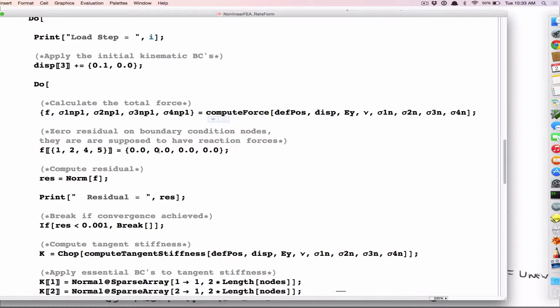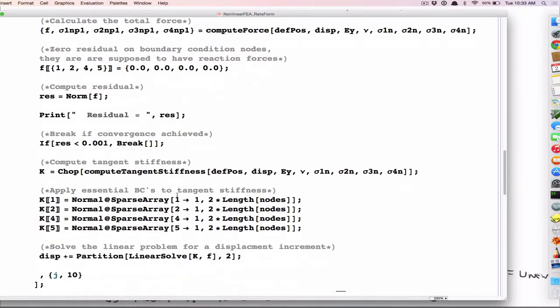If it's not, compute the tangent stiffness. Modify the tangent stiffness with the boundary conditions. These are basically just shorthand ways to put ones on the diagonal. So I put ones on the diagonal. Now I have a tangent stiffness that's been modified correctly, and I solve it. So I solve it. I compute a new displacement increment. Go back to the top. Start over. Go again and again.